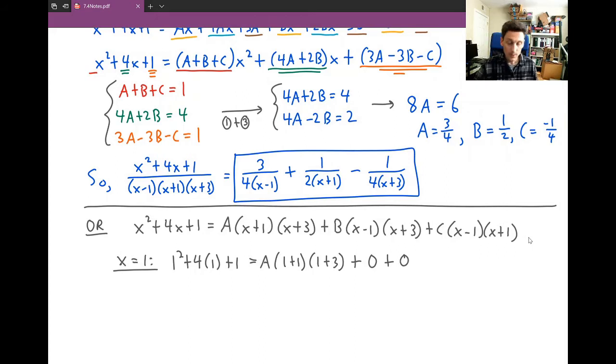So when I plug in x = 1, the equation collapses to a single equation with a single unknown, namely A. Solving this equation, you end up getting A = 3/4.